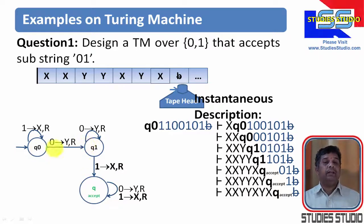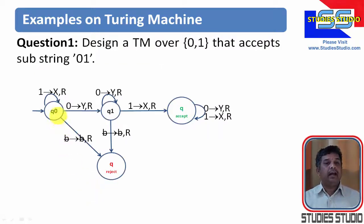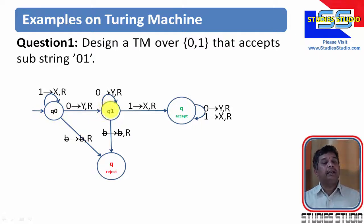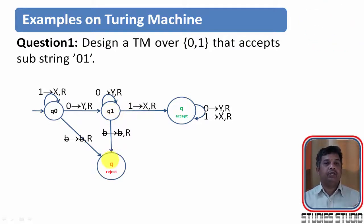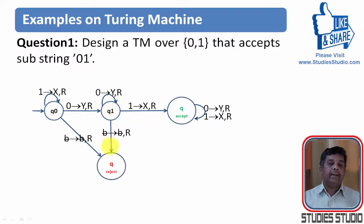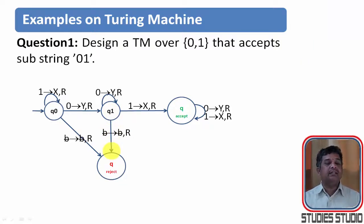Now, when will the string be rejected? Whenever we get a blank at the beginning itself, it will be rejected. Whenever we get a blank before finding the first 0, we come to a reject state. After getting the first 0 or a few more 0s, if we reach the end of the string without getting a 1, we come to the qreject state. I hope you understood this.